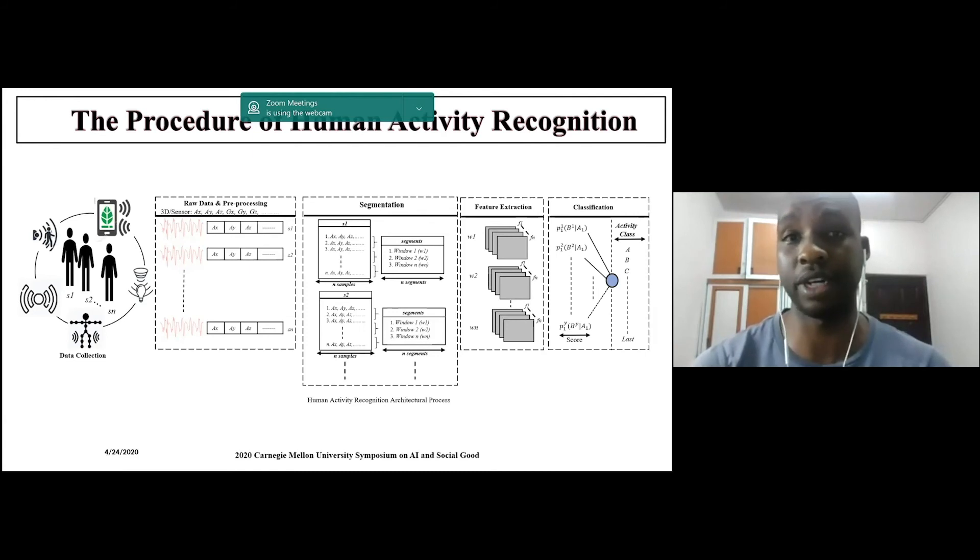Finally, we got the probability of each feature vector extracted from the individual windows so we can classify which activity belongs to this. To improve the accuracy of our model, we used peak sliding window with 50% overlap. This is because sensor data collected from elderly individuals is very noisy.